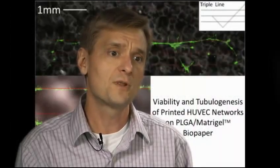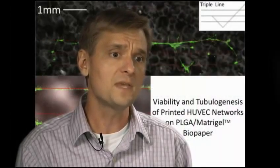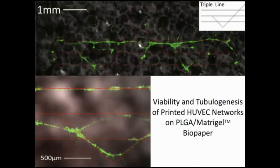To demonstrate the biopapers' printability, we used BioLP to form micron-scale branched patterns of human umbilical vein endothelial cells onto individual Matrigel-infused sheets. We observed tubulogenesis of the printed HUVEC cells as they grew together to form cord-like networks that actually followed the printed design.